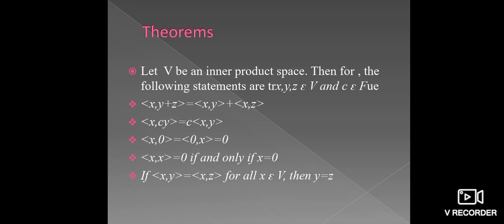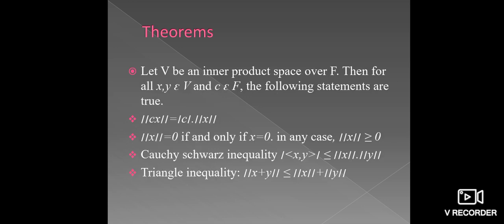Finally, if the ordered pair (X, Y) equals the ordered pair (X, Z) for all X belonging to vector space V, then Y equals Z. Next, let V be an inner product space over the field F; then for all X, Y belonging to V and C belonging to F, the following statements are true. First: the norm of cX equals the modulus of c times the norm of X. Second: the norm of X equals 0 if and only if X equals 0; otherwise the norm of X is positive.